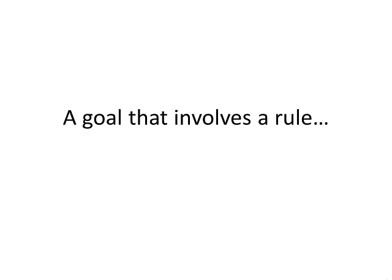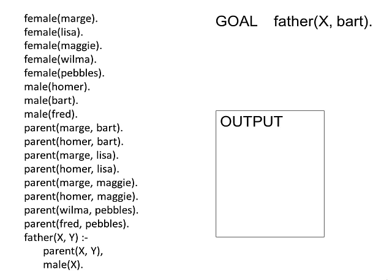So what happens when we perform a query that involves a rule? This time we are looking for the father of Bart. Prolog begins by searching for the predicate father. When found, the variable Y can be instantiated to Bart, because that information was provided in the original goal.